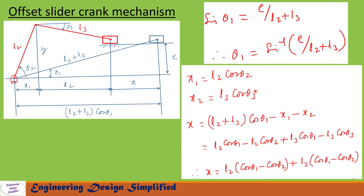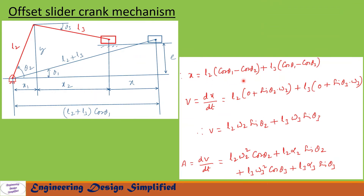Now let us write the displacement equation. The horizontal component of l2 is x1 = l2·cos(theta2). Similarly, the horizontal component of l3 is x2 = l3·cos(theta3). We know that the total length from crank center to extreme position is (l2 + l3)·cos(theta1), so slider displacement x = (l2 + l3)·cos(theta1) − x1 − x2. After substituting x1 and x2 and simplifying, we get: x = l2·(cos(theta1) − cos(theta2)) + l3·(cos(theta1) − cos(theta3)).